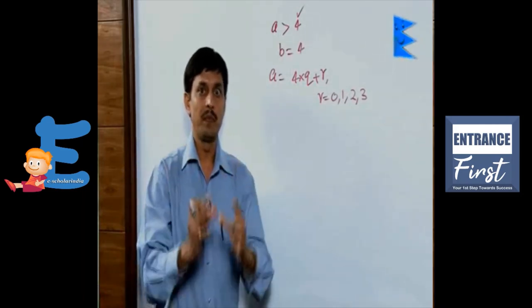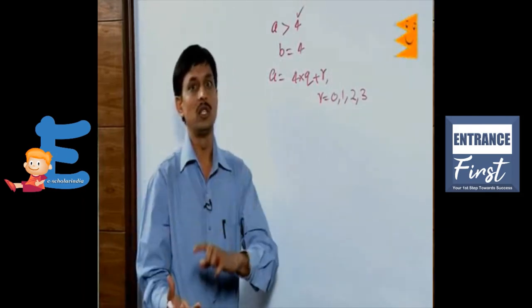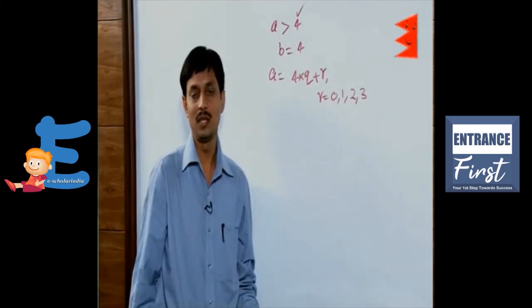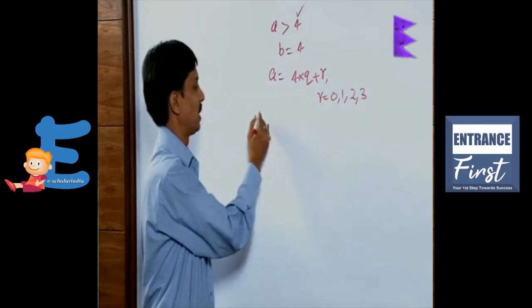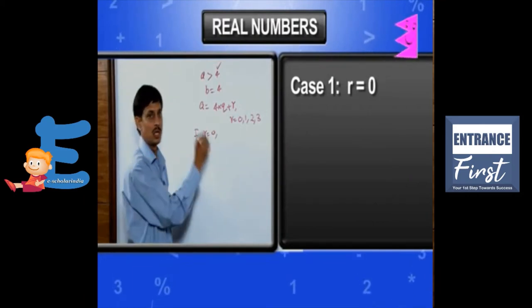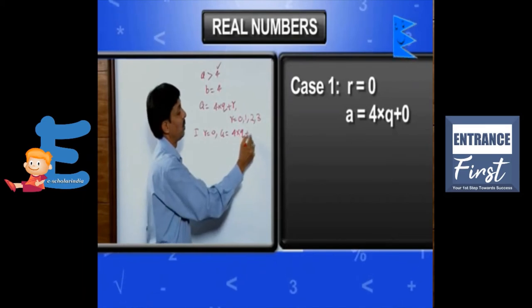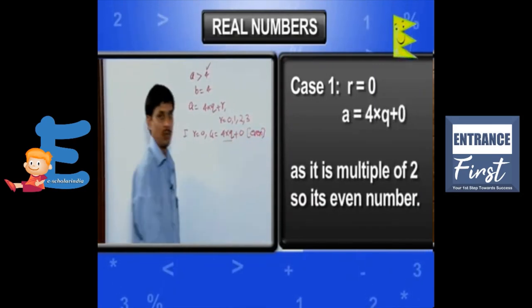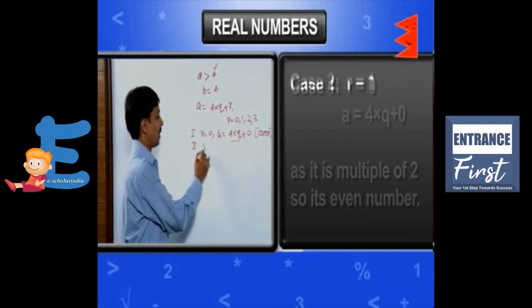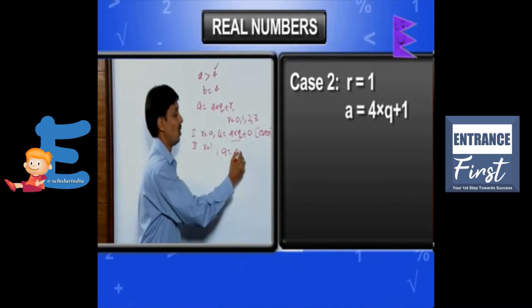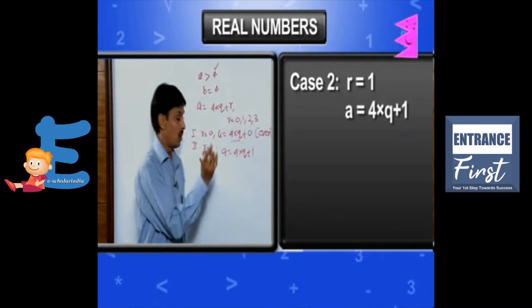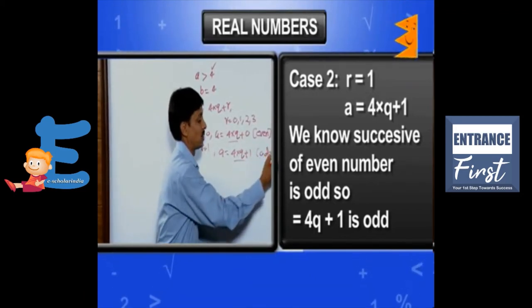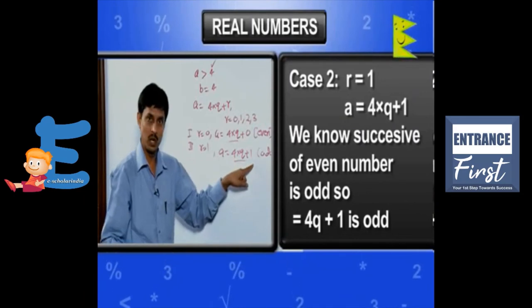Case 1: If R equals 0, the number becomes A equals 4Q plus 0, which is clearly a multiple of 2, hence it is even. Case 2: If R equals 1, then A equals 4Q plus 1. We know that 4Q is even, so 4Q plus 1 is odd. Hence, one result is proved: any number in the form of 4Q plus 1 is odd.